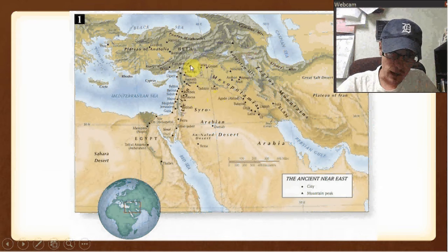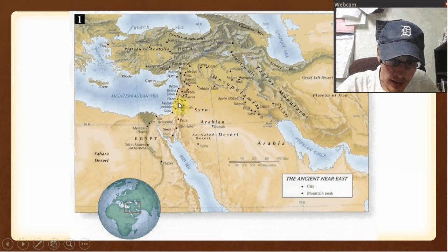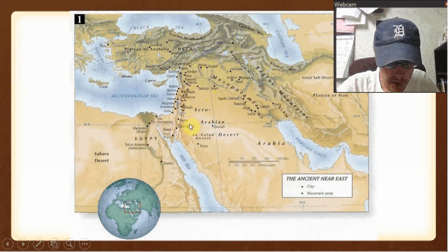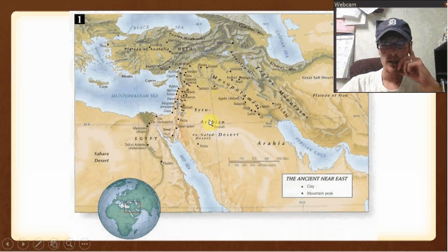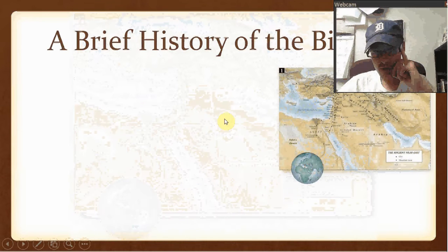Then this is the land of Israel here. You've got the Dead Sea, the Sea of Galilee up here, the vast desert they traveled through, and Egypt over here. So there's your basic outset.